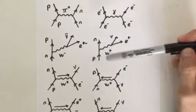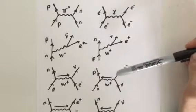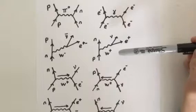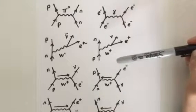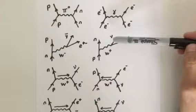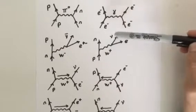Diagram 4 represents beta plus decay. A proton decays into a neutron, a positron, and an electron neutrino.